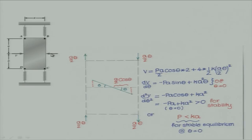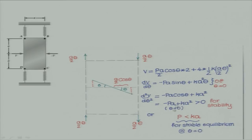The potential energy contribution from forces P: after rotation, each force moves inward by A/2·cos(θ), which for small theta is A/2·(1 − θ²/2). So the potential energy from P is P·(A/2)·cos(θ)×2. The spring potential energy is 4 × ½K(A/2·θ)². Setting dV/dθ = 0 confirms theta equal to 0 is equilibrium. The second derivative at theta equal to 0 gives −PA + KA², which must be greater than 0, so P must be less than KA.